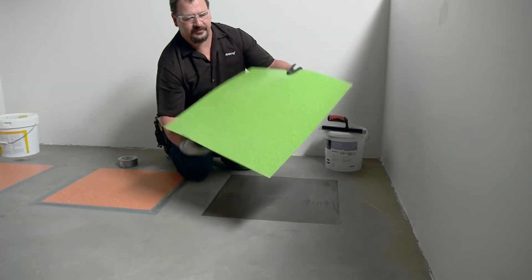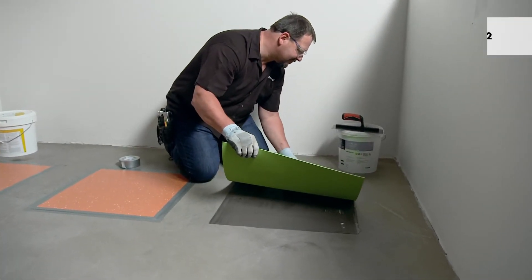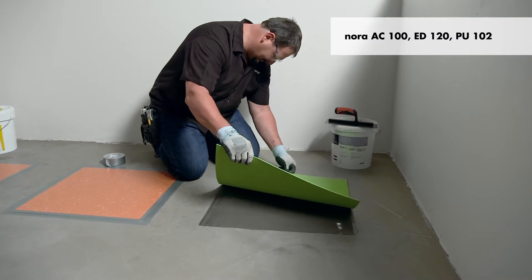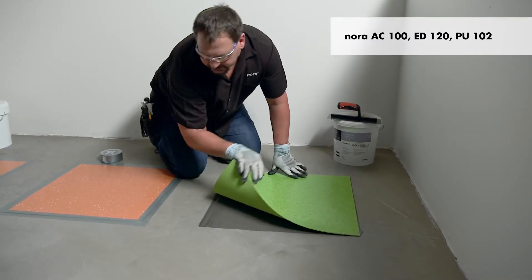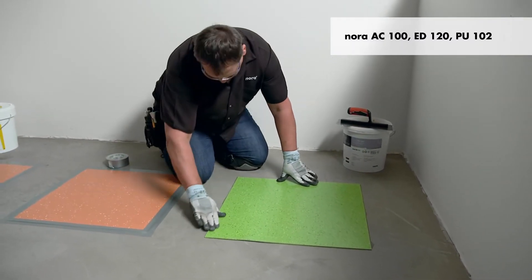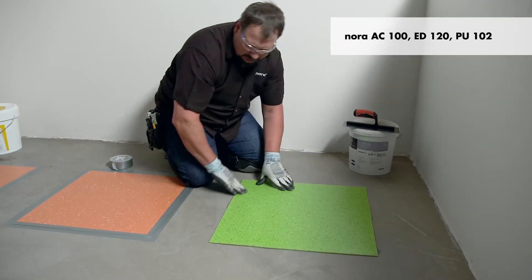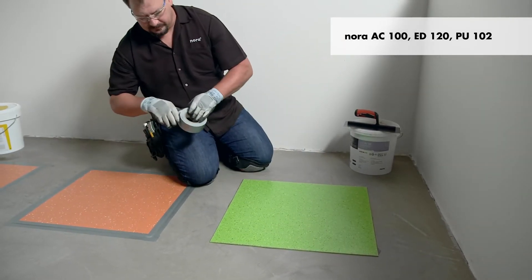The test procedure depends on the type of adhesive specified. For Nora AC100, ED120, and PU102 wet set adhesives, install the bond test material using the specified trowel in accordance with the Nora installation instructions.